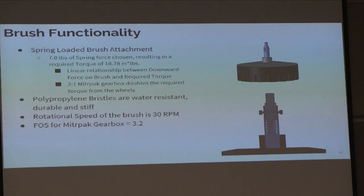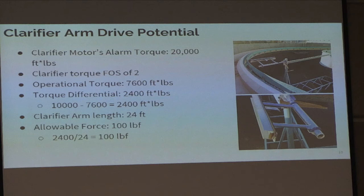We selected a polypropylene bristle brush that is water resistant and doesn't absorb any water, performing really well in wet environments — essential since this brush will be in the water 24/7. Our minor pack gearbox can handle about 60 inch-pounds of torque, giving us a factor of safety of about 3 since we're only passing about 22 inch-pounds. The clarifier motor has an alarm that sounds if you exceed about 20,000 foot-pounds of torque. Our clients gave us a factor of safety of about 2 for this torque value; the current operational torque is about 6,700 foot-pounds, leaving us about 2,400 foot-pounds to drive our device. With a 24-foot clarifier arm, that gives us 100 pounds of tangential force to drive the device along the wall and clean the surface.